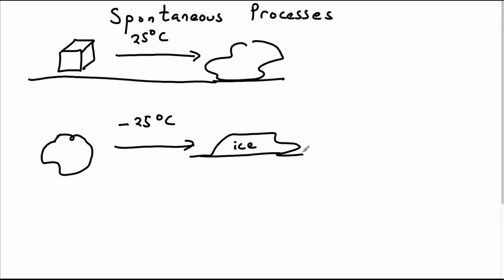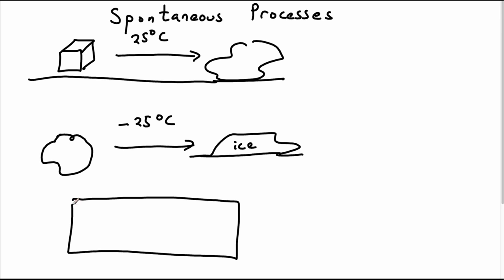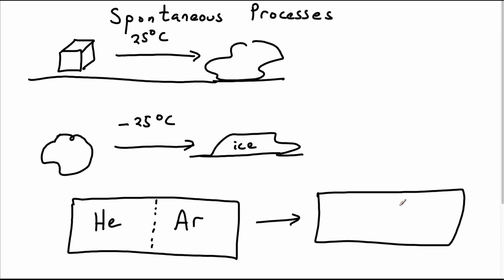Another example: imagine that you had a box with a divider, and we had helium gas on one side and argon on the other. If we pull out the divider, we know it's going to be spontaneous — those two gases are going to mix and we'll just end up with a mixture of the different gases. That's not because of any interaction; we know that interactions in gases at normal temperatures and pressures are negligible. So it's nothing to do with intermolecular forces. There's something else that's making this go in that direction.